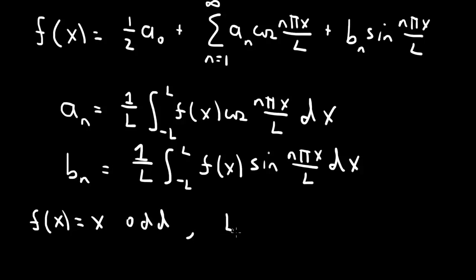So f of x equals x is odd. And l, the periodicity length, 2l is the periodicity length. So l goes, the function goes from minus pi to pi. So l is equal to pi.